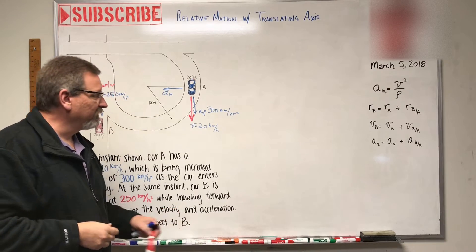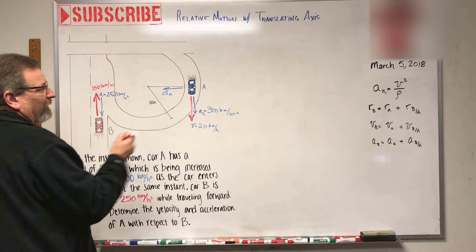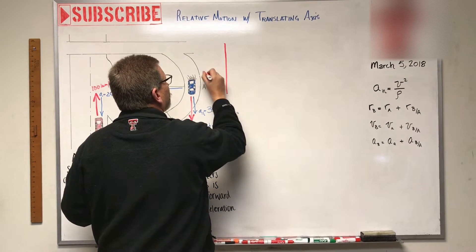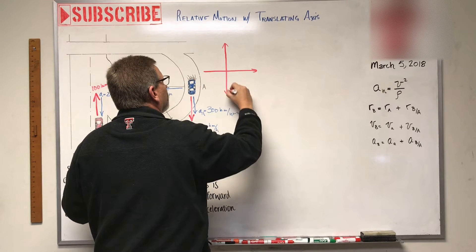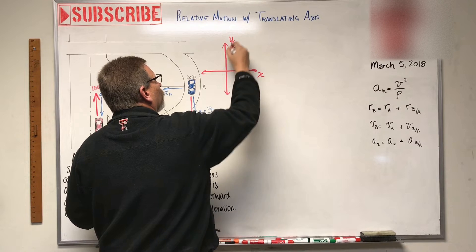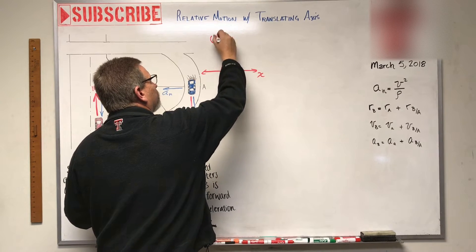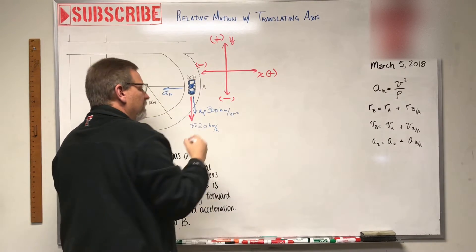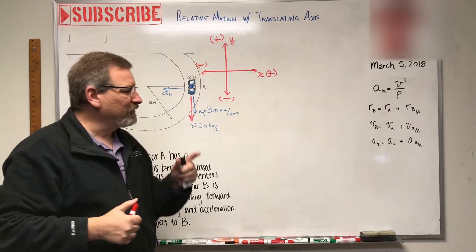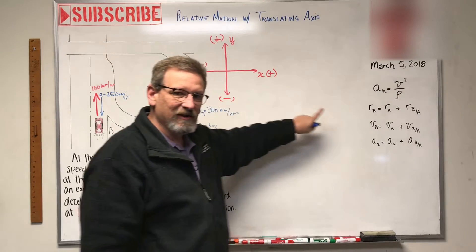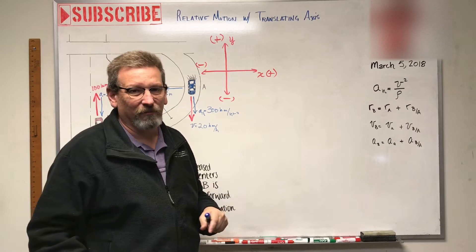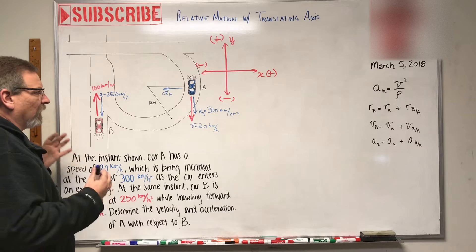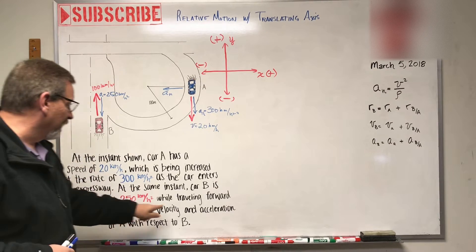It's important to pick a coordinate system. Using standard Cartesian convention: rightward is positive x (i-hat), upward is positive y (j-hat), with negative in the opposite directions. All velocities and accelerations plugged into the equations must have signs consistent with this convention.